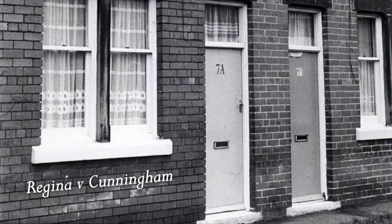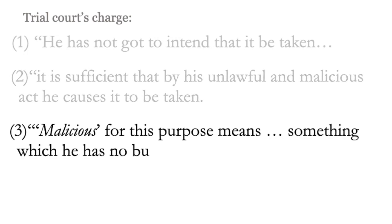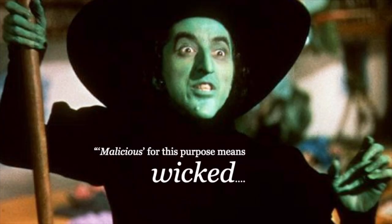Let's finish our discussion of Regina v. Cunningham. There was a third part of the jury instruction which the appeals judges did not approve. The instruction read: 'Malicious for this purpose means something which he has no business to do and perfectly well knows it,' and also 'Malicious for this purpose means wicked.' The appellate court flatly rejects this approach, writing that the word maliciously in a statutory crime postulates foresight of consequence.